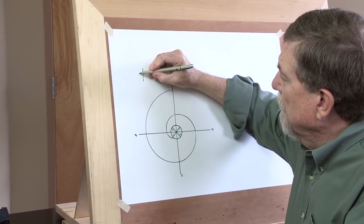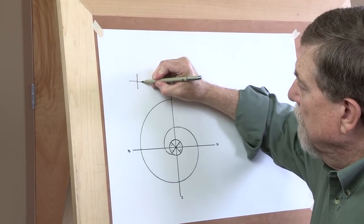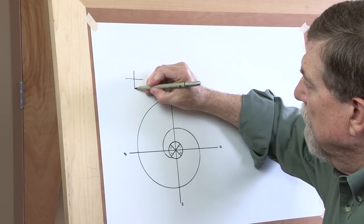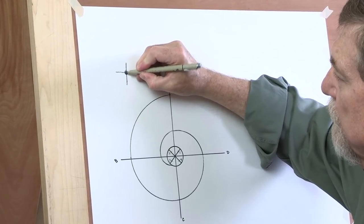So we start with a vertical and a horizontal. We'll draw a little eye in there, maybe something the size of a dime.